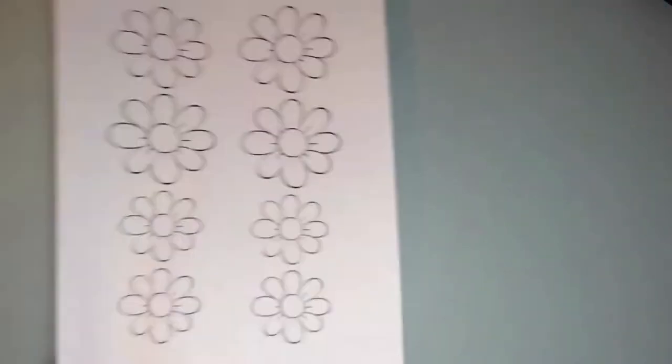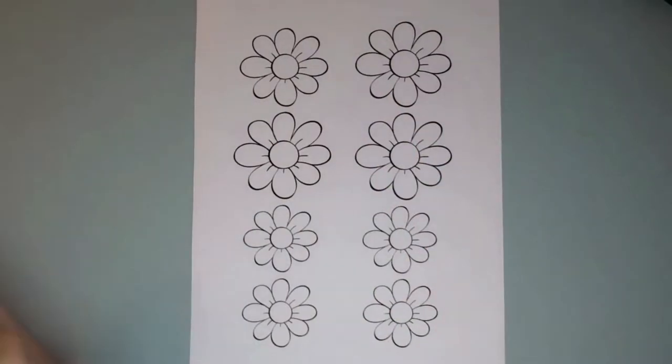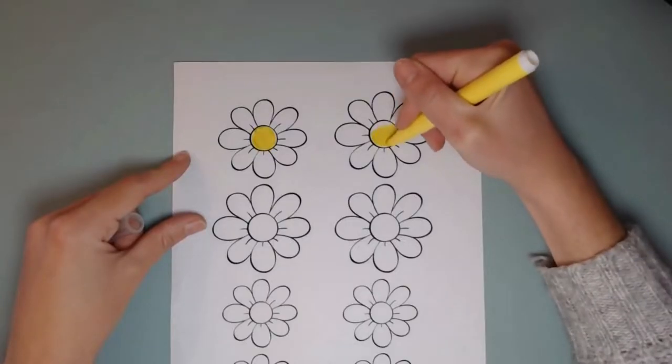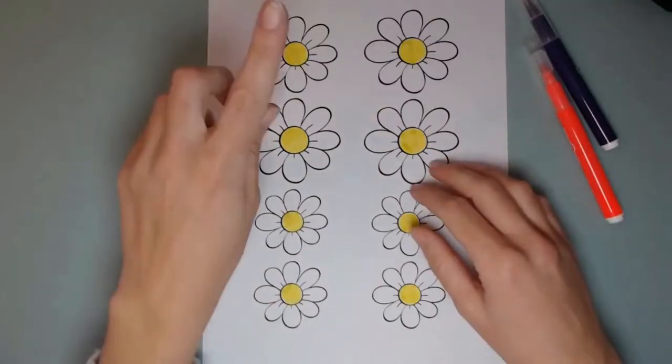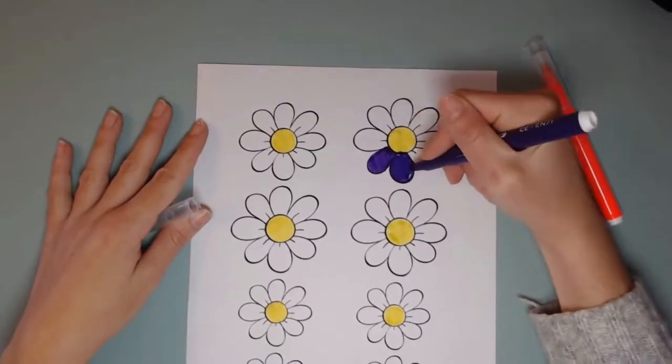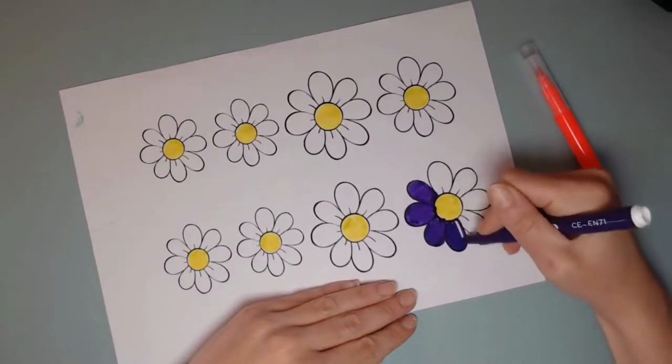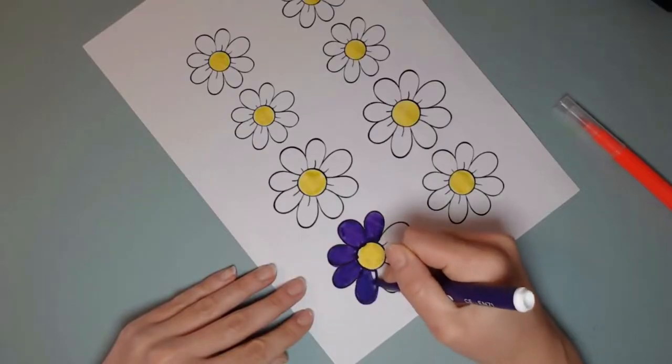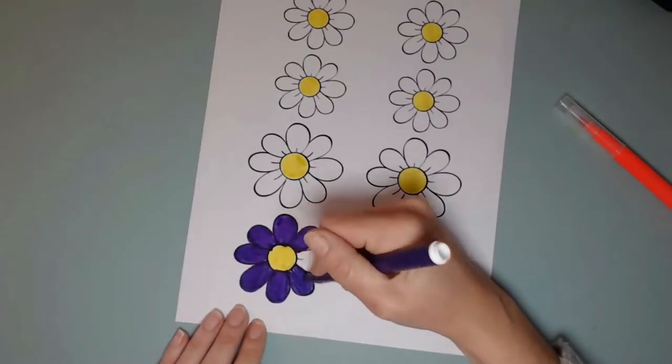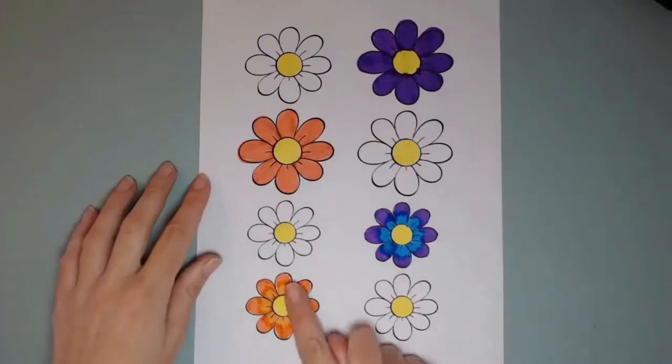Now take your flower templates. You'll need your yellow marker to color in the center of each flower. Next you need two colored markers. I've chosen purple and dark orange. It's a good idea to leave some flowers white. When you're coloring your flowers make sure you leave no white spaces. That's looking really nice.